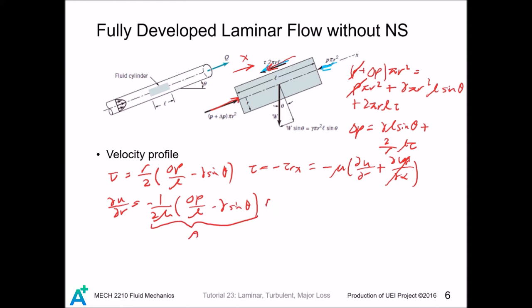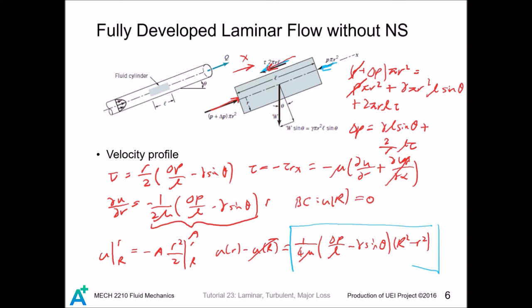We can let this constant as a. We recall that we have a boundary condition that is the no-slip condition as r equals radius. We perform definite integral and we can expand this out. This term is 0, and this is our expression for the velocity profile.